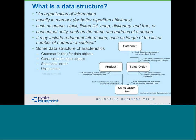Uniqueness — how do we identify a specific individual out of all of those? What's the arrangement? Can it be hierarchical, relational, or a network type? What sort of balance do we have in how we're setting it up? And what sort of optimality are we trying to achieve? One of the first conversations Tom and I had was about price, quality, and speed — and the answer was: pick two of three. You cannot possibly do all three equally well.